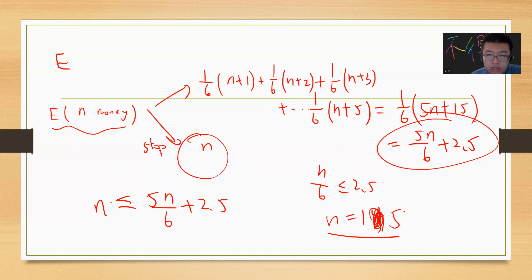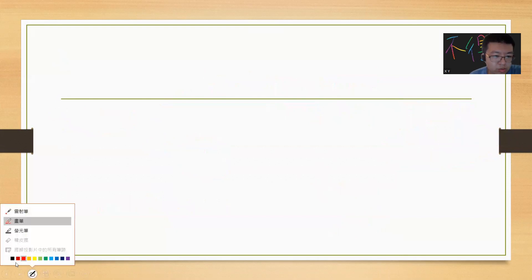That means when n equals 15, you will choose to stop. Even though n is 15, you still have the chance that you could lose all the money, so in this case you will stop. One can easily see that when you have 15, the expectation value of money is 15 because you will stop.